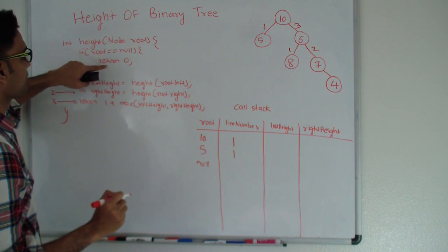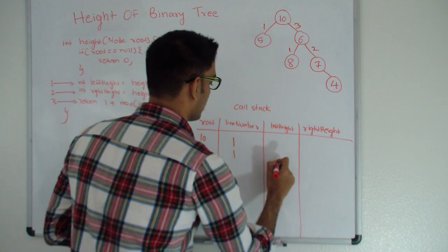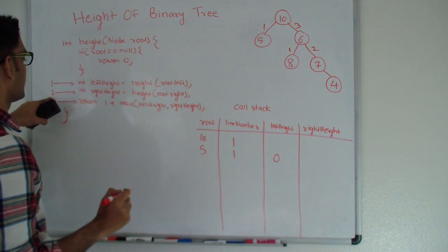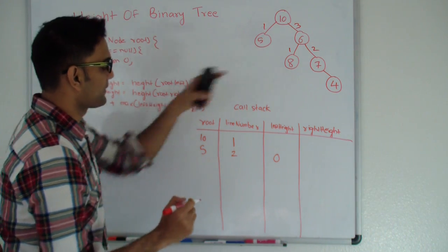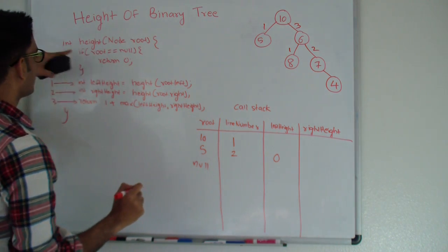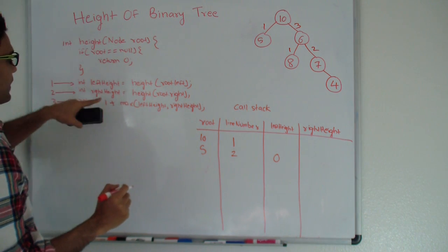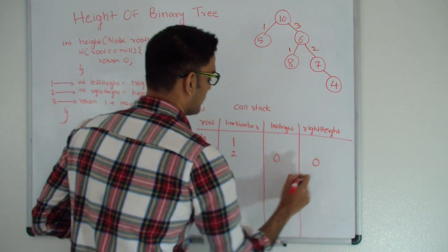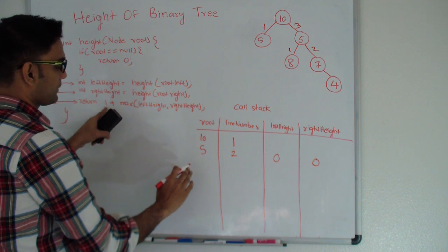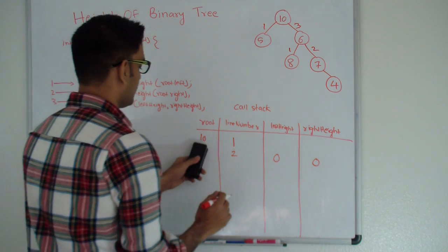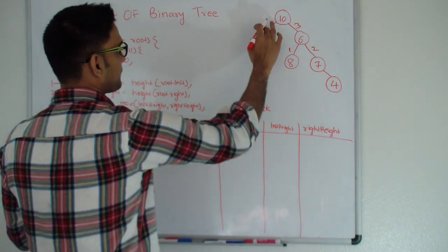5 is not null so I go into recursion from line number 1 with root.left which is null. Null returns 0, so left height for 5 is 0. Then 5 executes line number 2, which is again a recursion with 5's right which is also null. So root is null, it returns 0. Right height is also 0, and then 5 returns 1 plus max of 0 and 0, which is 1. So 5 returns 1 to 10.